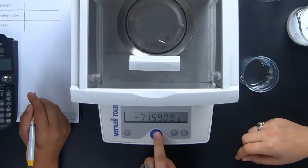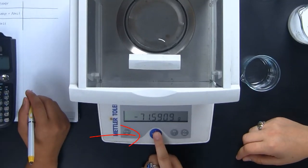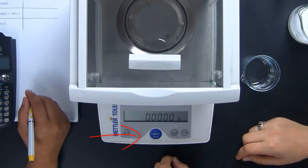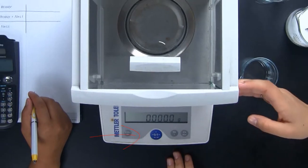Before we start, Ileana is going to zero the balance. Remember, we never put any reagents directly onto the balance pan.